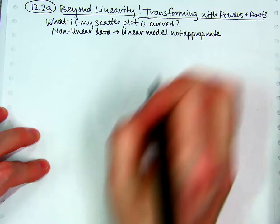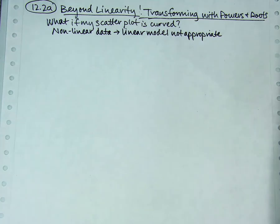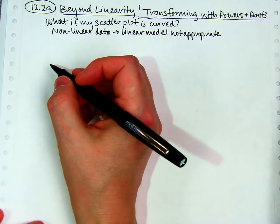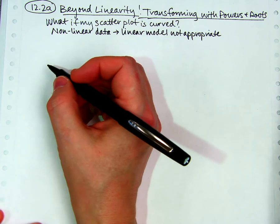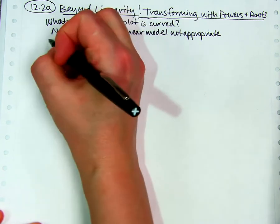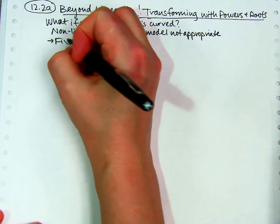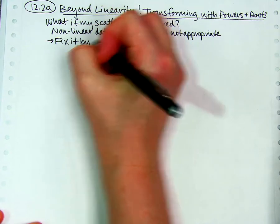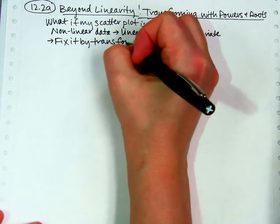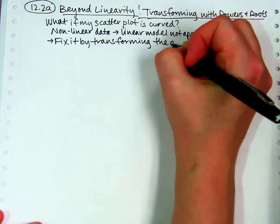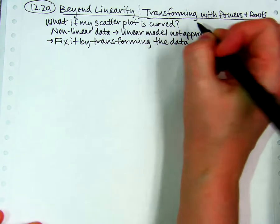So, then what? Do we just give up and say, oh well, it's curved, so I guess we can't do it? No, nice try. No, we're going to do something about that. And there's a number of things we could do. In other math classes, you may have learned how to fit a curve, but in stats, what we usually do is we fix it by transforming the data. Or, in other words, we do something to the data to make the curve straighten out.